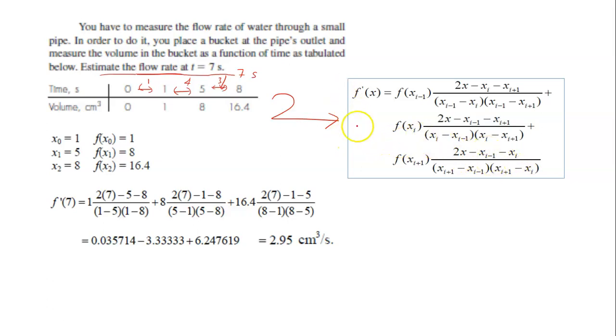So for this, to use this equation, you only need 3 data only, which is the xi, xi plus 1, and xi minus 1. And x here is what you want to determine. So in this case, your x here is 7.